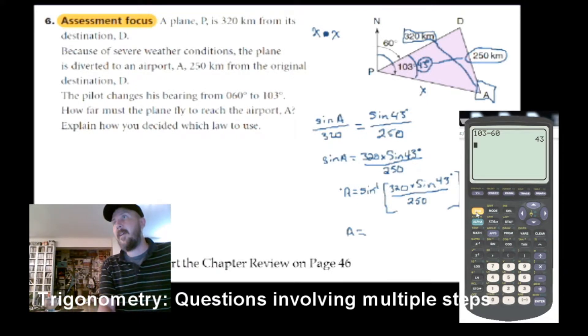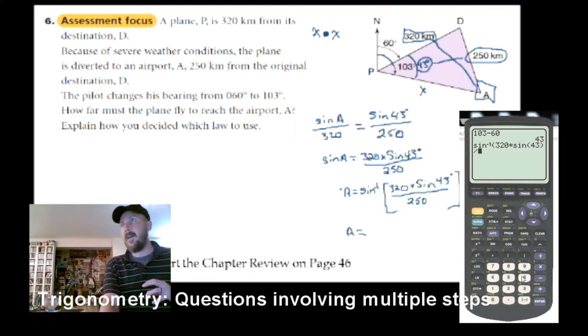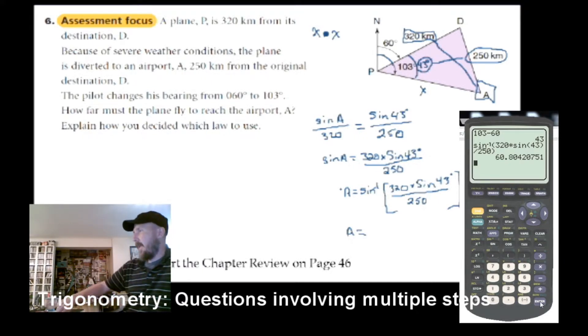We can type it into our calculator. I'm going to do a second sine. All this stuff is going to be inside that bracket. So I'm doing a 320 times sine 43. I've got to close this bracket because otherwise I have too many open brackets. Divide by 250. And now I've got to close that whole big other bracket so the calculator knows what it's doing. So that angle is 60.8. So angle A is 60.8 degrees up here. This is 60.8 degrees right in there.